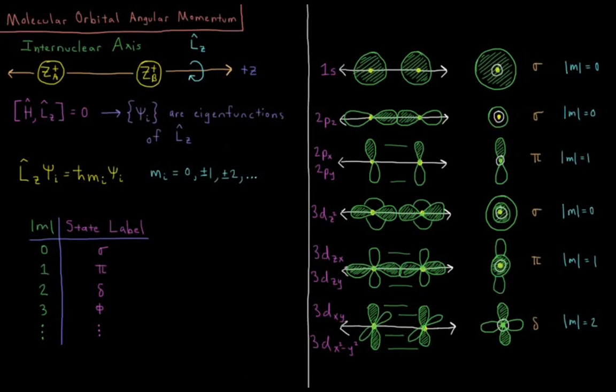This video will discuss the Z component of angular momentum for molecular orbitals. Let's assume we have some diatomic molecule here. We have nucleus A of charge ZA+, nucleus B of charge ZB+. We have our internuclear axis here which is defined as the Z axis.